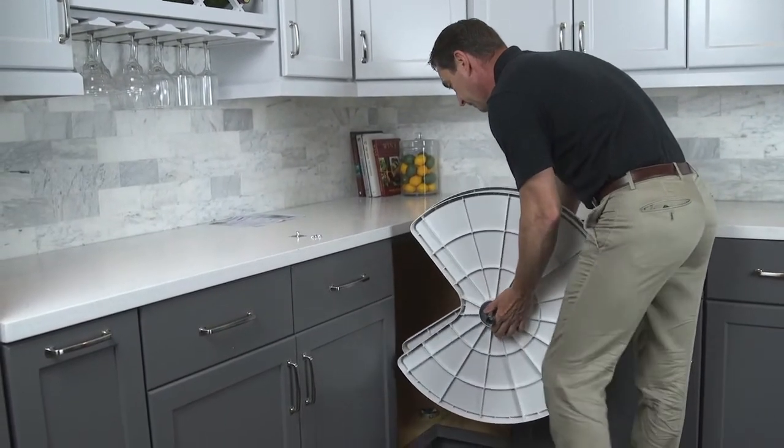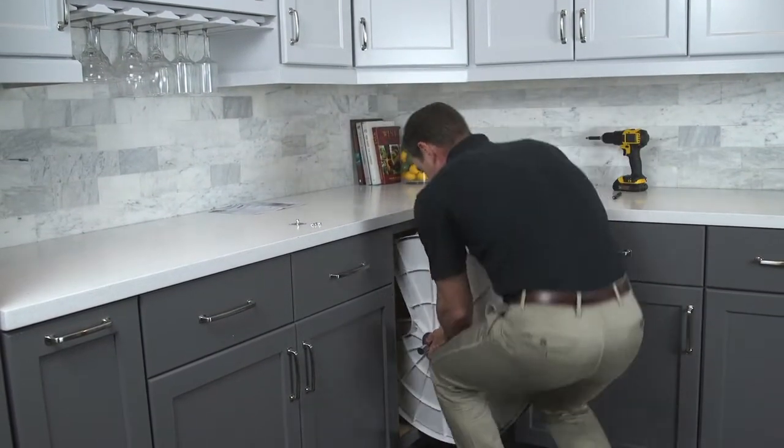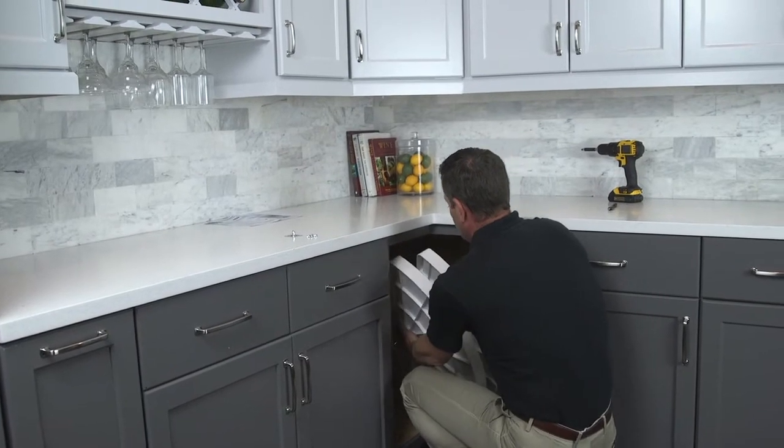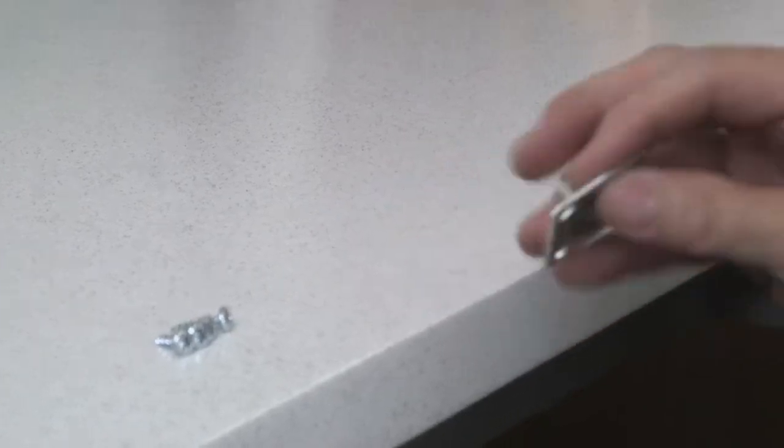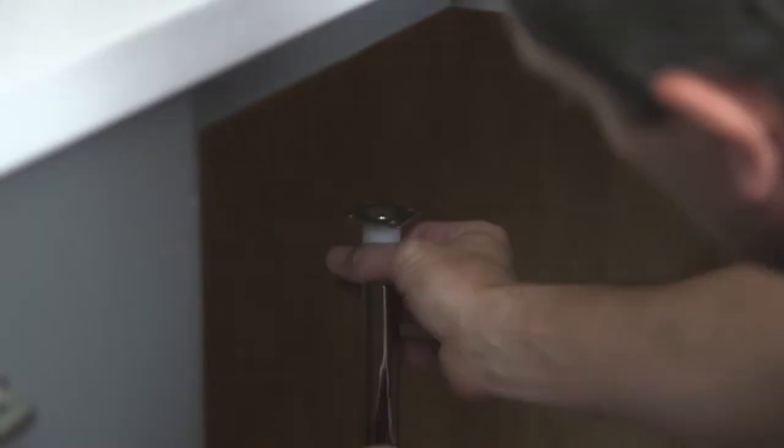Carefully work the organizer into the cabinet opening. Place the bottom of the pole into the lower mounting support. Place the upper mounting support on the top of the pole.